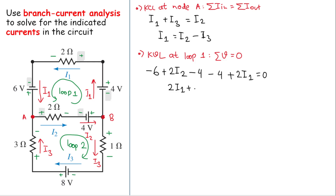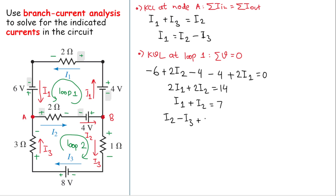So we have 2i1 plus 2i2 equal to negative 6 minus 4 minus 4, which is minus 14. Moving the sign to the right-hand side gives 14. Dividing through: i1 plus i2 equals 7. Since i1 equals i2 minus i3, substituting gives i2 minus i3 plus i2 equals 7.